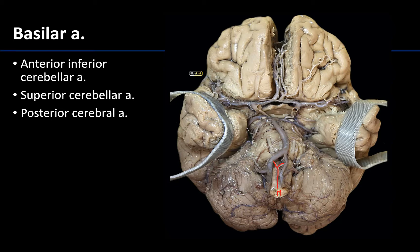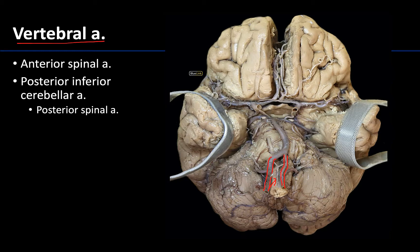Next let's locate the posterior inferior cerebellar artery — that is really a mouthful, so we like to abbreviate it, and you'll often hear this referred to as PICA. It is going to be the branch of the vertebral arteries that's a little bit on the larger side, particularly in comparison to the anterior spinal artery. You can see these coming off transversely from the vertebral arteries. It has a close relationship with the accessory nerve as it ascends through this region. PICA typically gives off the posterior spinal artery, though these can also be a direct branch of the vertebral artery.